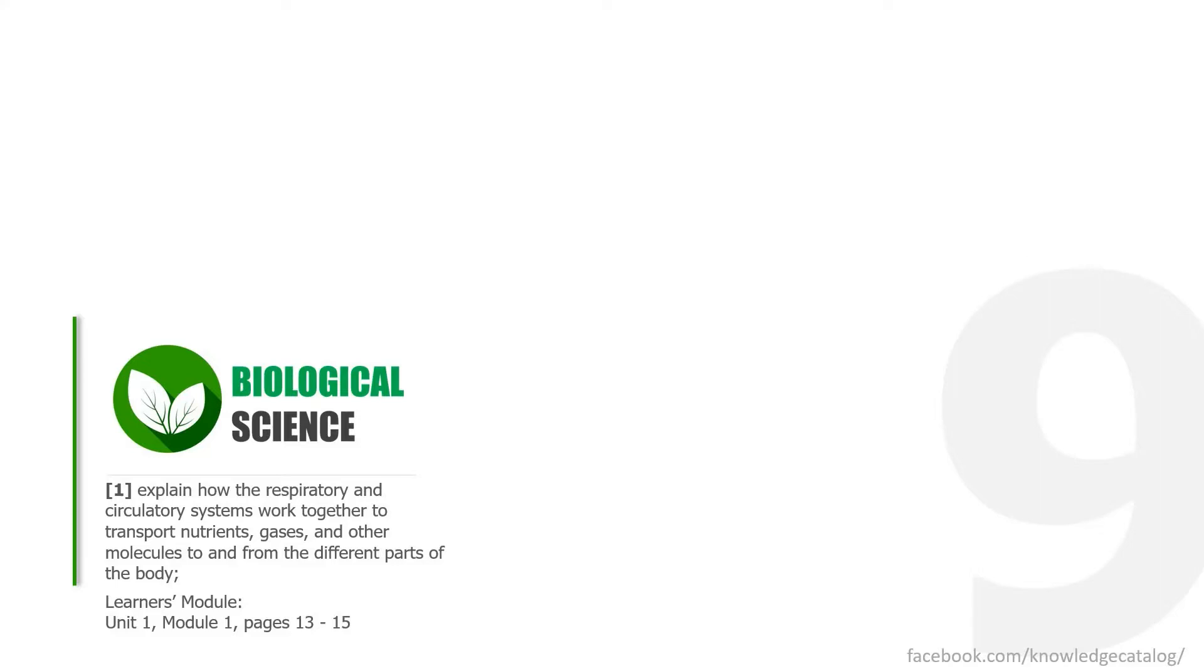The competency is: explain how the respiratory and circulatory systems work together to transport nutrients, gases, and other molecules to and from the different parts of the body. You are going to need your learner's module, preferably a printed one, or I can provide you with a soft copy. Unit 1, Module 1, pages 13 to 15.